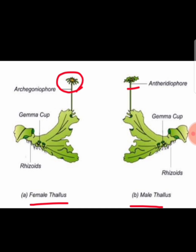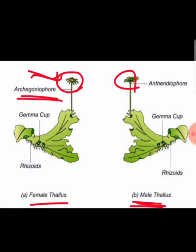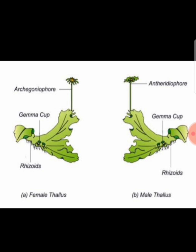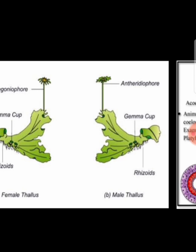In Marchantia, you can find female thallus and male thallus. In the female it is the archegoniophore, and in the male it is the antheridiophore. You have to distinguish female and male thallus in Marchantia based on the structure of the archegoniophore and antheridiophore.